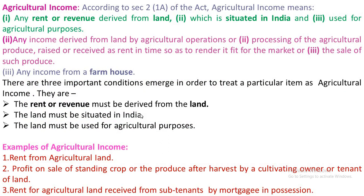First of all, we shall know the meaning of Agricultural Income. According to Section 2(1A) of the Act, Agricultural Income means: 1. Any rent or revenue derived from land, 2. Which is situated in India, and 3. Used for agricultural purposes.